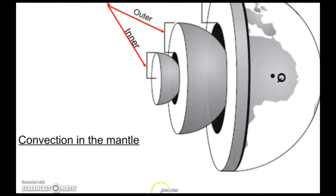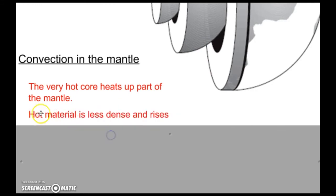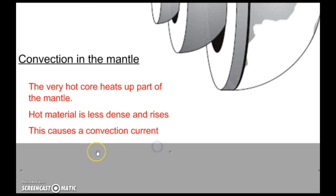Now convection in the mantle. We should write a little bit about this. The very hot core heats up part of the mantle. Hot material is less dense and rises. We've learned this before. The reason we're repeating this is because this is what drives a lot of what happens in Earth science. This hot material is less dense, so it wants to rise up, and then this causes a convection current.